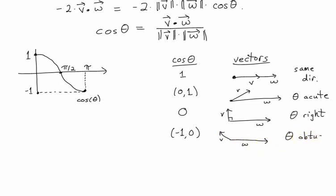And finally, if you get negative 1 for your cosine, well, the angle between them is pi radians, or 180 degrees. In other words, your two vectors are pointing in opposite directions.